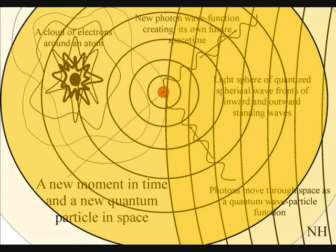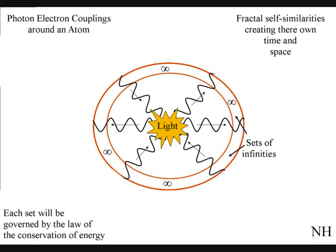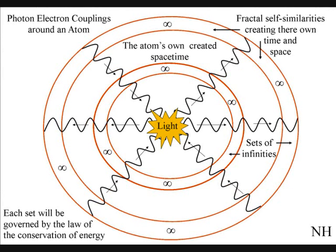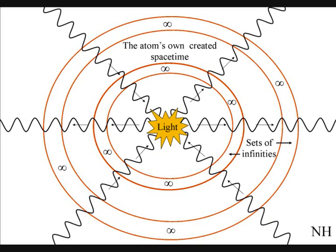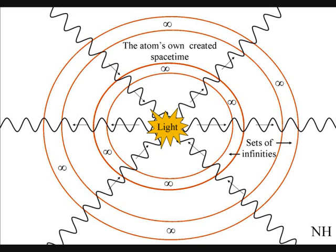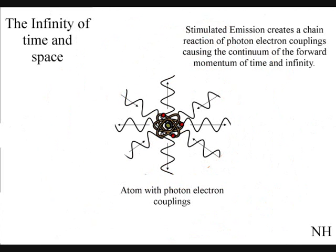This is a continuous process within our universe that Einstein called stimulated emissions, that creates a chain reaction of photon-electron couplings. Put very simply, the light emitted by an atom now is going to be absorbed by another atom later on, and this process creates the time continuum, or arrow of time.